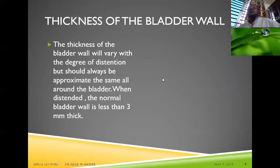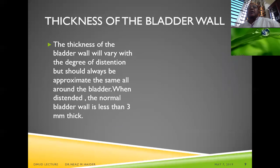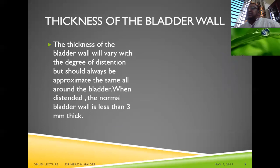The thickness of the bladder wall varies with the degree of distension but should always be approximately the same all around the bladder. A normal bladder wall is less than 3 mm in thickness.